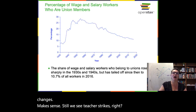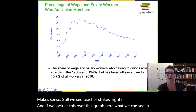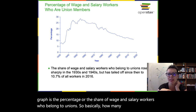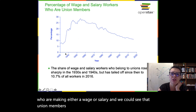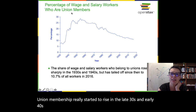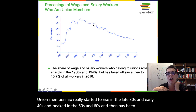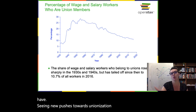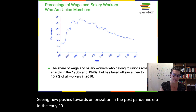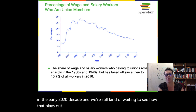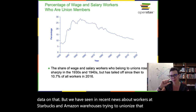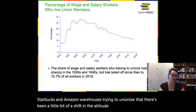So we see teacher strikes. Looking at the graph of the percentage of wage and salary workers who belong to unions, union membership really started to rise in the late 30s and early 40s, peaked in the 50s and 60s, and then has been trailing off in the last 30 years. What this book doesn't talk about is that we've seen new pushes towards unionization in the post-pandemic era — in the early 2020s — and we're still waiting to see how that plays out. We've seen workers at Starbucks and Amazon warehouses trying to unionize, showing a shift in attitudes towards union membership.